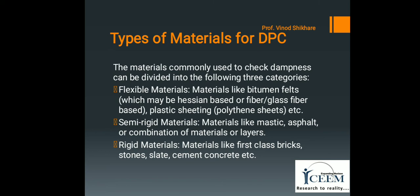Next is types of materials for damp proof course. The materials commonly used to check dampness can be divided into three categories. First is flexible materials — materials like bitumen felts, which may be resin-based or fiber-based, and plastic sheeting such as polythene sheets. Next is semi-rigid materials, which include materials like mastic asphalt or a combination of materials or layers. And last is rigid materials, which include materials like first class bricks, stones, slates, cement, concrete, and so on.